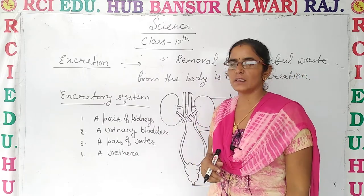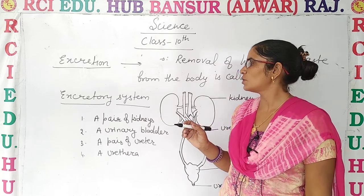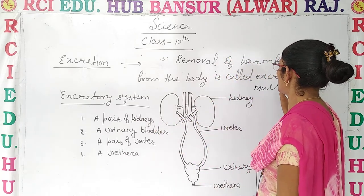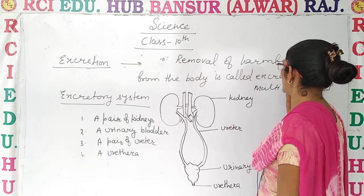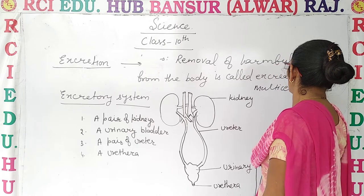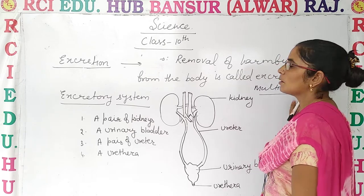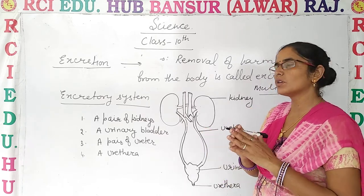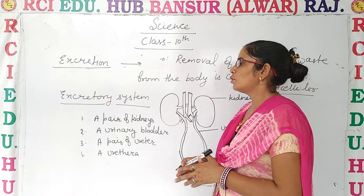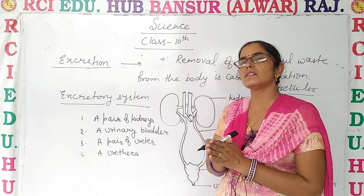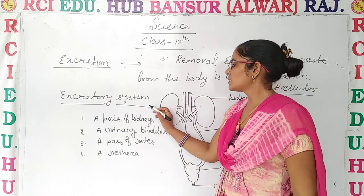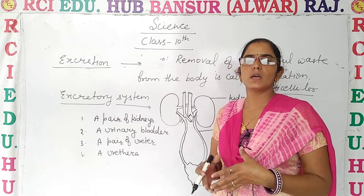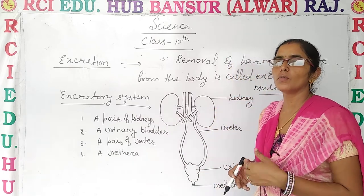But in humans, what happens? We are multicellular organisms. In our body, we have combining organ systems. Multicellular organisms have a well-developed excretory system. What is the function of the excretory system? Its function is to remove the harmful waste.